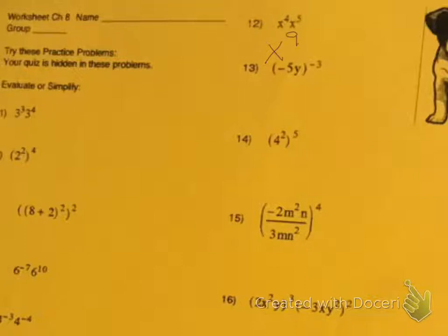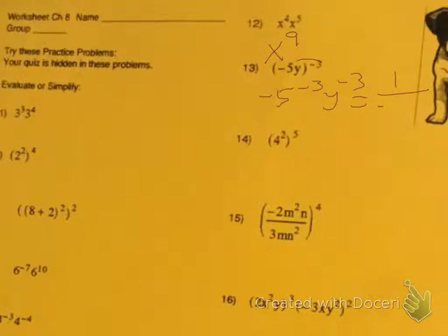Number 13, we're going to distribute, and we get negative 5 to the negative 3rd, y to the 3rd. And since they're both negative, we need to take the reciprocal to make them positive. So it becomes 1 over negative 5 to the 3rd times y to the 3rd.